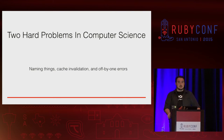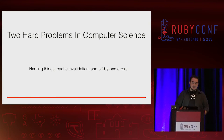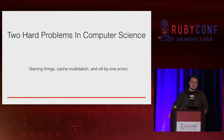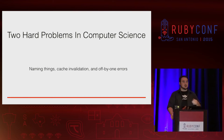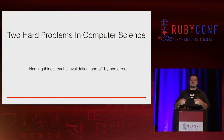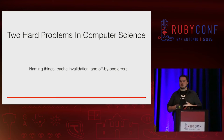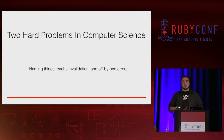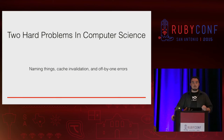There are two hard problems in computer science: naming things, cache invalidation, and off-by-one errors. What we're going to focus on today is naming things. I firmly fall into the camp of Bob Martin that comments are an apology. If you have to write a comment to explain what's going on, typically that means you have not chosen a correct or effective name for the functions, methods, or variables you're using.